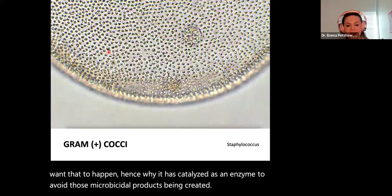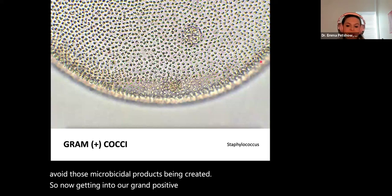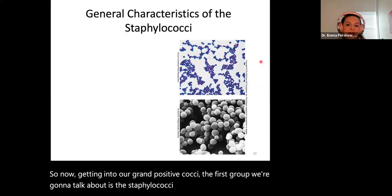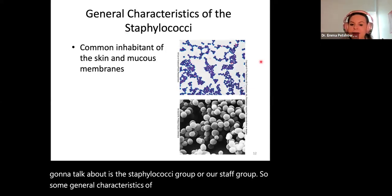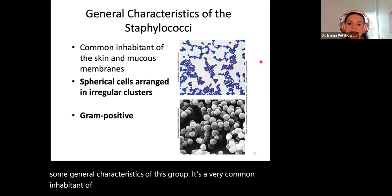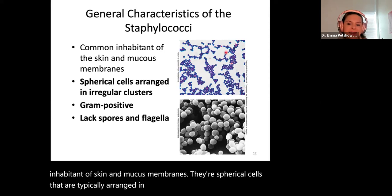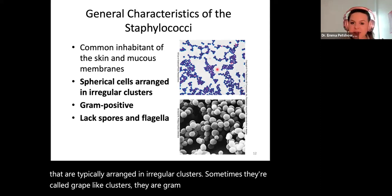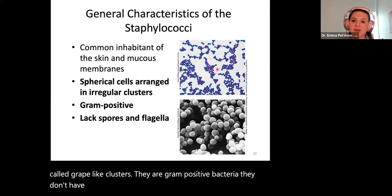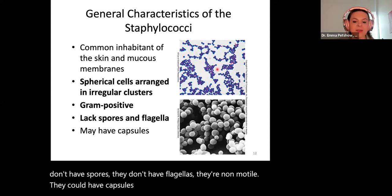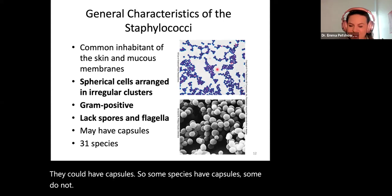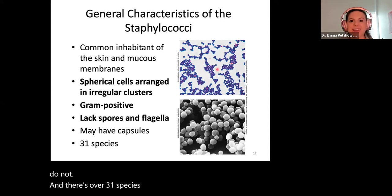Now getting into our gram positive cocci. The first group is the staphylococci group — our staph group. It's a very common inhabitant of skin and mucous membranes. Cells are spherical and typically arranged in irregular clusters, sometimes called grape-like clusters. They are gram positive, don't have spores, don't have flagella, and are non-motile. Some species have capsules and some do not. There are over 31 species; we're going to focus on about three or four.